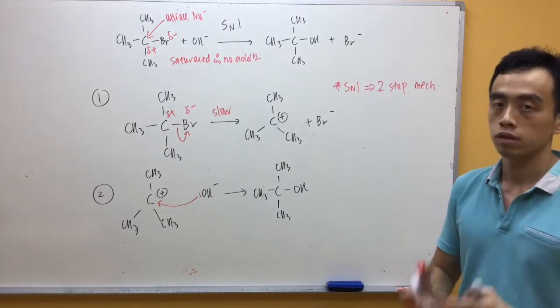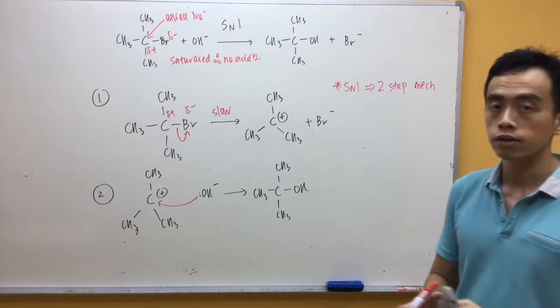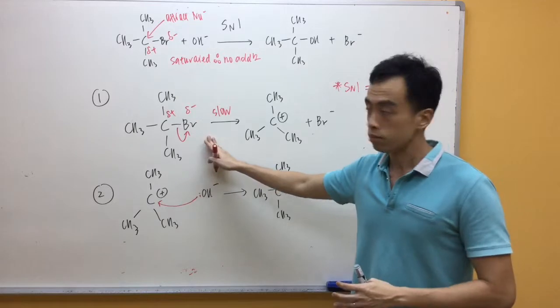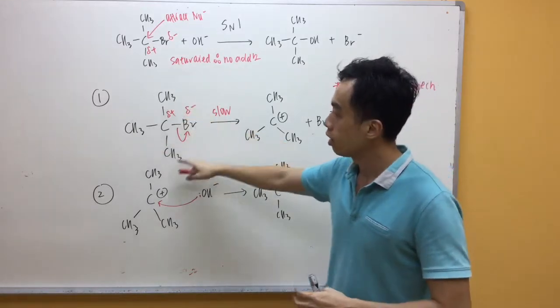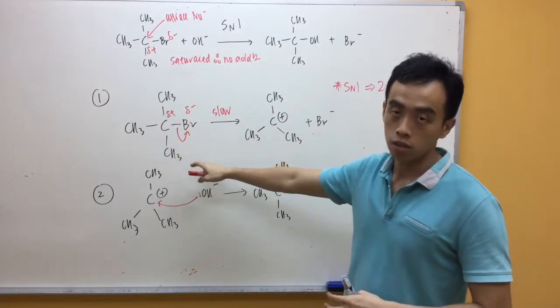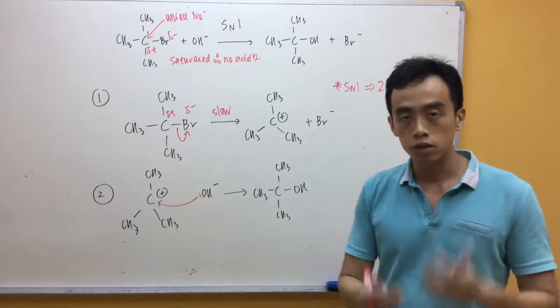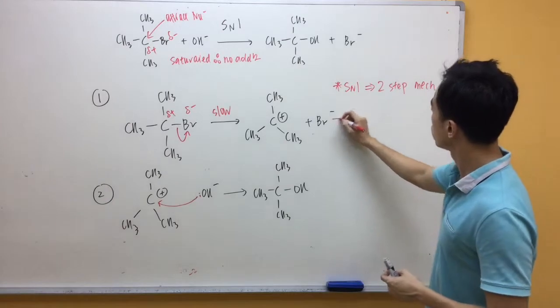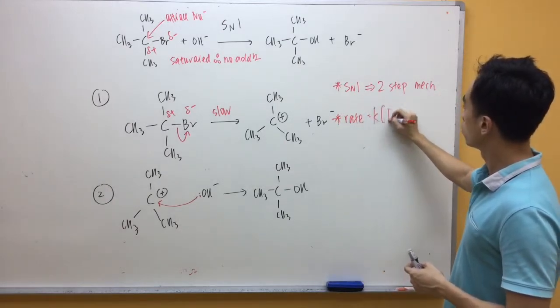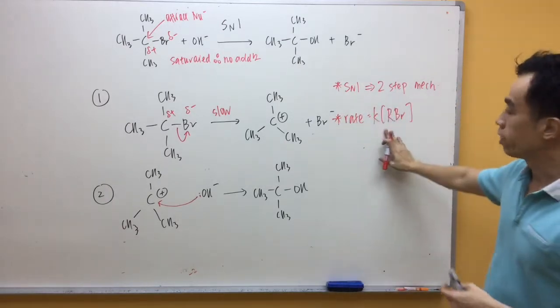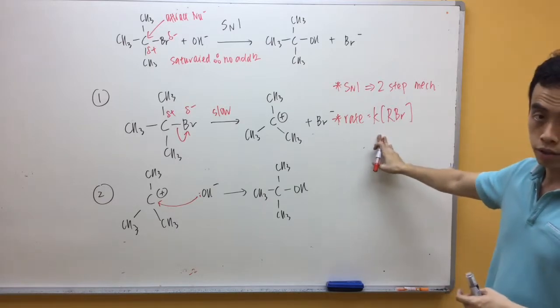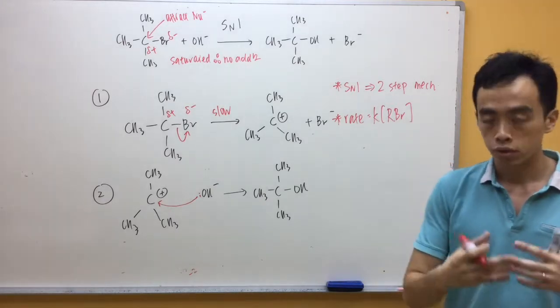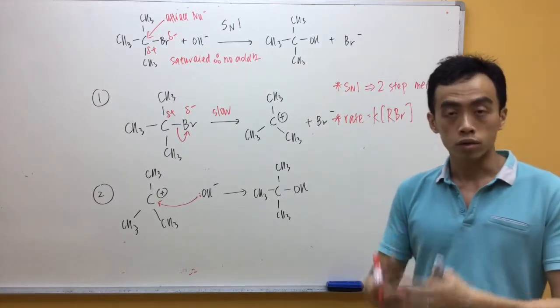The second thing we have to talk about is the rate equation. The rate equation, of course, I can derive it from the slow step. The first step is my slow step. You'll notice there's only one halogenoalkane involved in my slow step. Therefore, it's the first order with respect to halogenoalkane. The rate equation is equal to a constant, the constant multiplied by the concentration of RBr, which is my halogenoalkane, order 1.